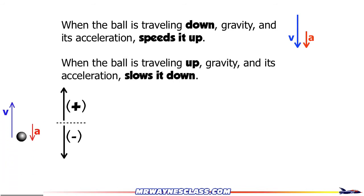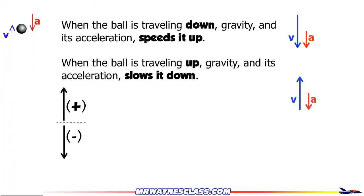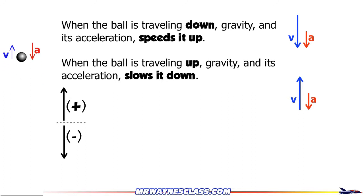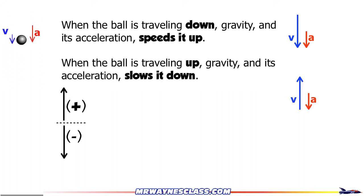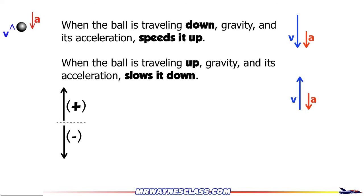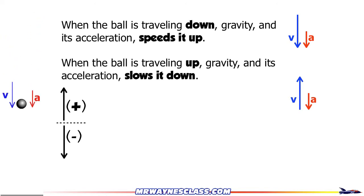On the way up, when the velocity and acceleration go in opposite directions, the acceleration is slowing it down — reducing the velocity, making it less positive on the way up. On the way down, because the acceleration goes down, the velocity becomes more negative. The acceleration is due to gravity, gravity always goes down, and you cannot turn off gravity. So the acceleration is always going to be negative.